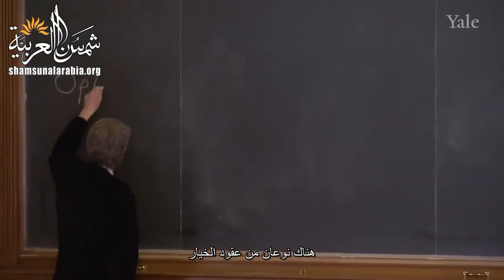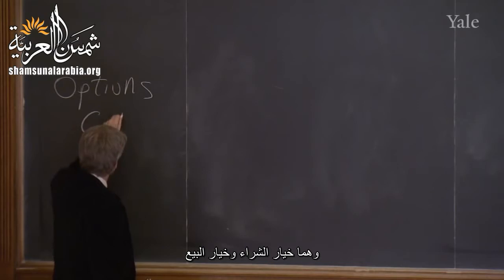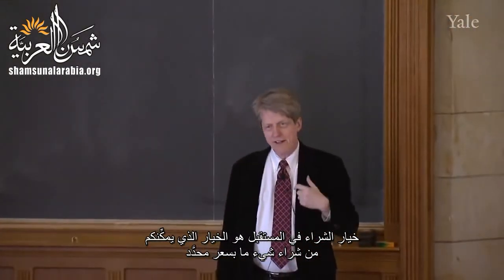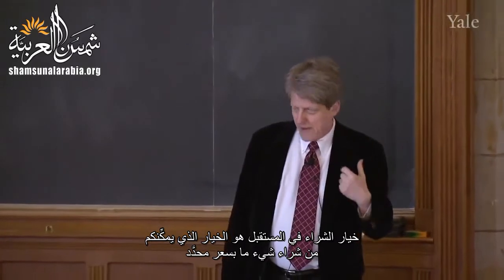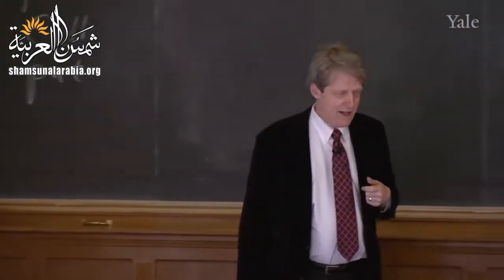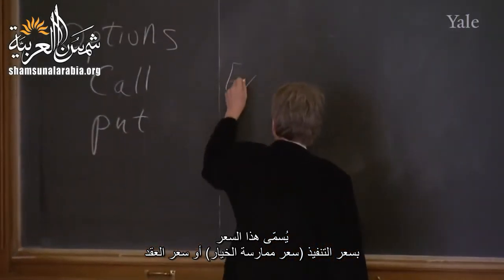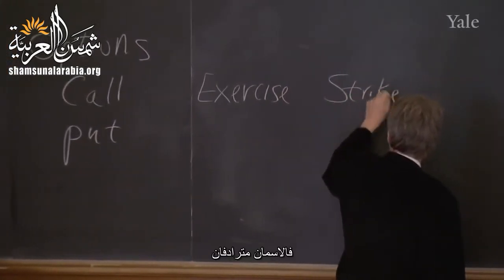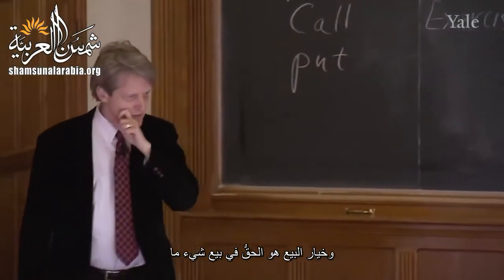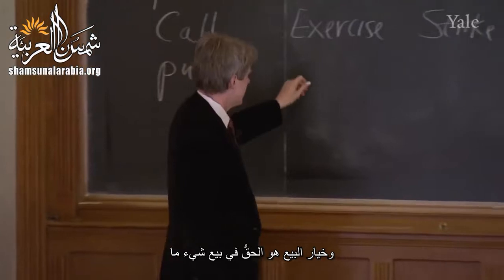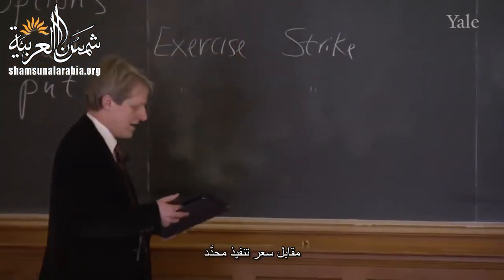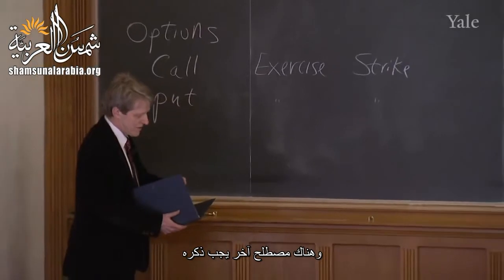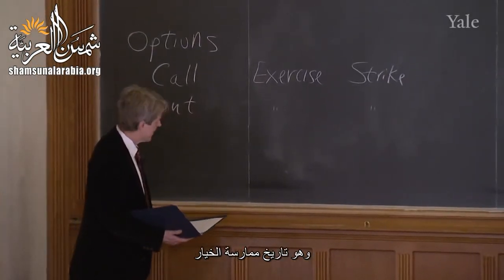There are two kinds of options: a call and a put. A call option is an option to buy something at a specified price, called the exercise price or strike price — those are synonyms. A put option is the right to sell something at the specified exercise price. It also has an exercise date that must be specified.